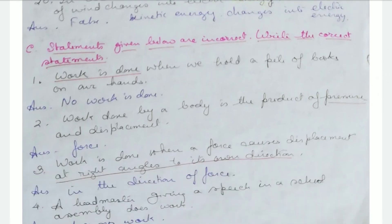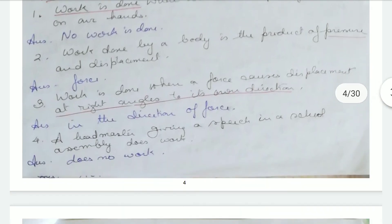Now we correct incorrect statements. Work is done when we hold a pile of books in our hands — correction: no work is done. Work done by a body is the product of pressure and displacement — correction: it is the product of force and displacement. Work is done when a force causes displacement at right angles to its own direction — correction: displacement must be in the direction of the force. A headmaster giving a speech does work — correction: he does no work.